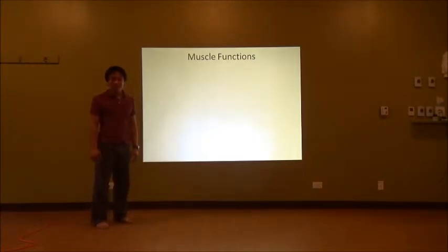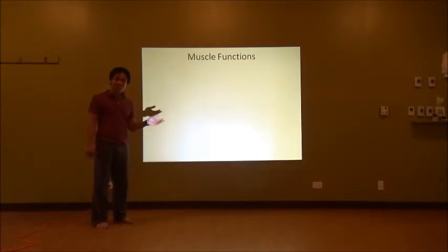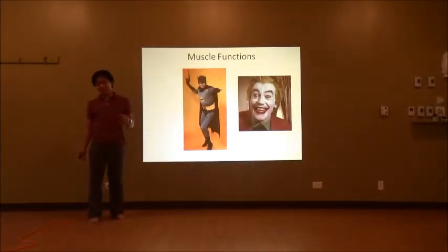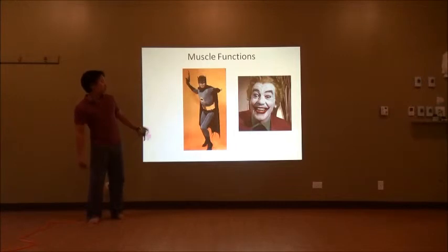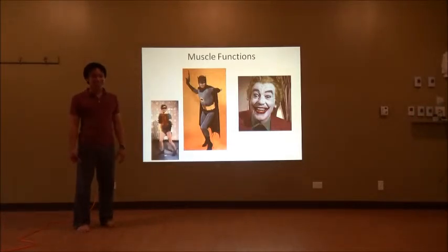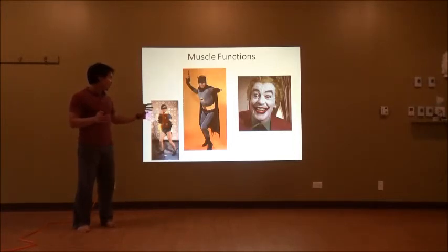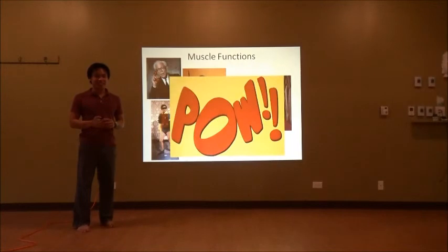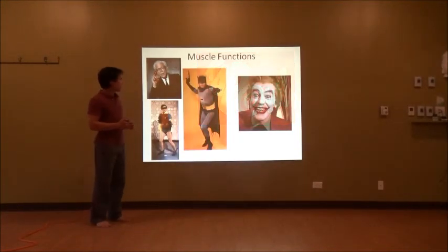A massage therapist named James taught me this mnemonic, and I've been teaching it ever since. The agonist is Batman — he wants to make the action happen. The antagonist is the Joker, fighting him on it. Robin helps Batman, so Robin is the synergist. And Alfred is in the background stabilizing everything — so Alfred is the stabilizer. That's how we remember it.